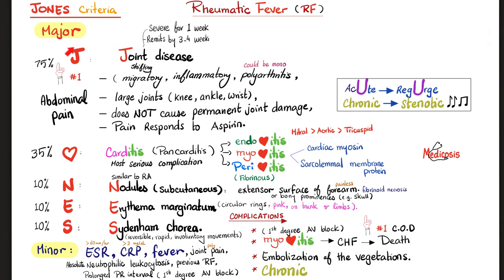The minor Jones criteria include: fever (non-specific), elevated ESR and CRP (non-specific), joint pain, absolute neutrophilic leukocytosis (seen in any bacterial infection), and prolonged PR interval (first-degree heart block). These are called minor criteria because they are not specific to rheumatic fever.